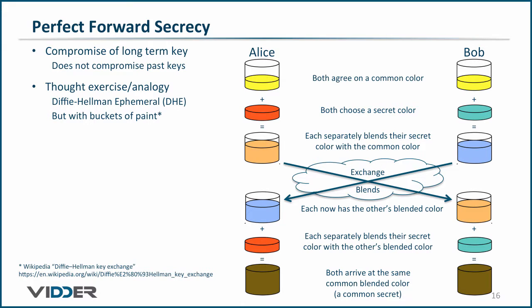The final step is for each to mix in their secret color to the other's blended color, with the result that both end up with the same common color.